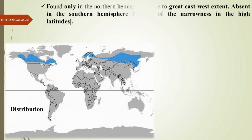The first thing to learn is the distribution. The Taiga biome is found only in the northern hemisphere — that is the first important point to remember. It is not found in the southern hemisphere. This biome is restricted to the northern hemisphere due to its great east-west extent, and it is absent in the southern hemisphere because of the narrowness of the high latitudes. Land distribution is the major reason for its existence only in the northern hemisphere.